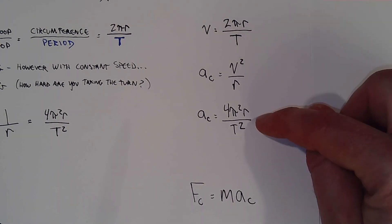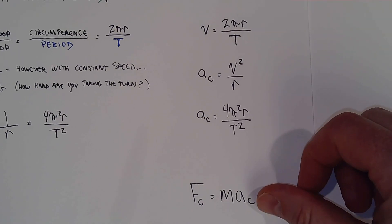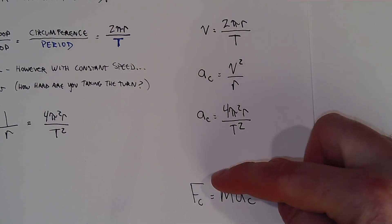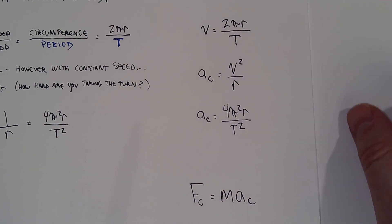So kinematics, kinematics, kinematics, dynamics. Dynamics here. The idea is that this is just F equals ma. That's all it is. We put a little c here, a little c there, just to specify that it's centripetal force and centripetal acceleration. That's all good.